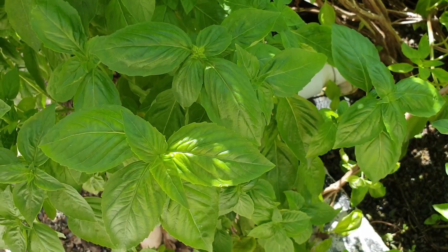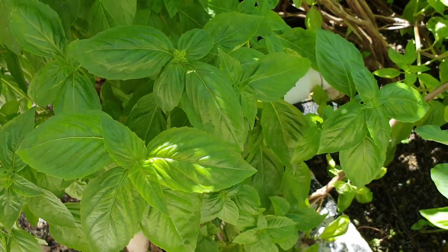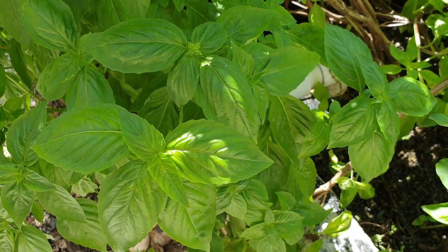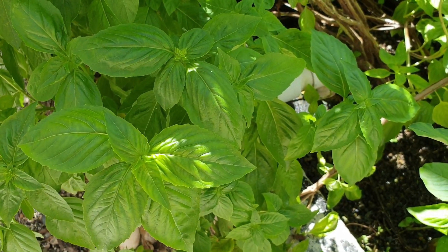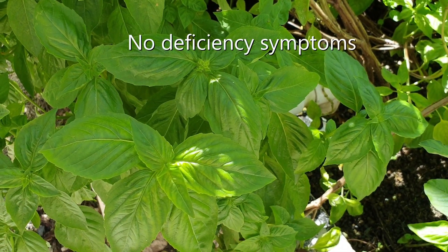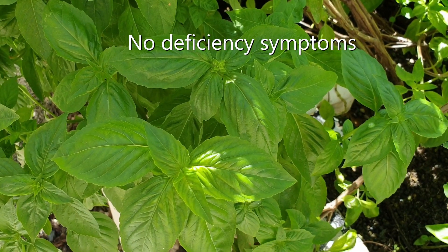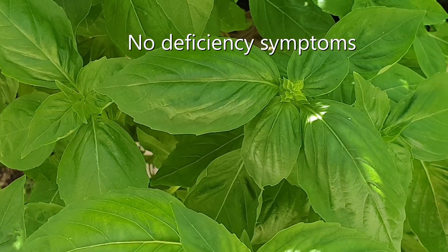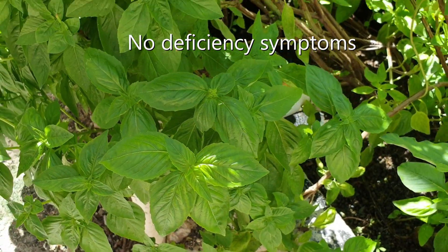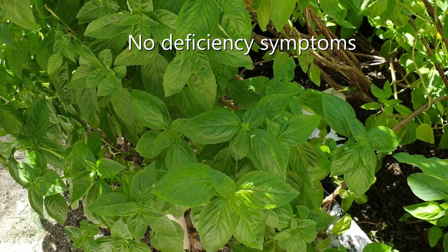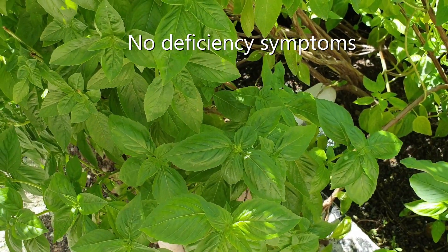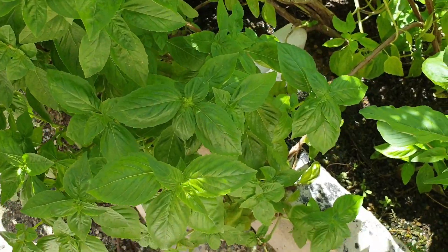I'm going to show you what a normal, non-deficient basil leaf looks like, and that is exactly what you are looking at now. They are basically green in their appearance. Now let me show you a basil plant or basil leaves that are deficient, just to show you the difference.